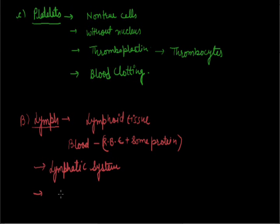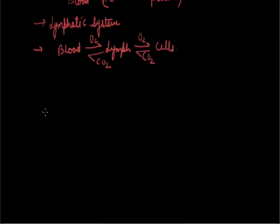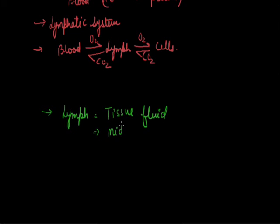Lymph acts as the middleman in our body. For example, if blood wants to diffuse anything towards a cell, first it is received by lymph and then moved towards the cells or tissues. Similarly, if cells release something, it moves towards the blood via lymph — you can take the example of oxygen and CO2. That is why lymph is also called tissue fluid. It is also helpful in transporting various substances by acting as a middleman. This concludes the topic of vascular connective tissue.